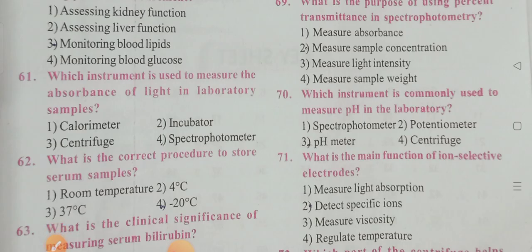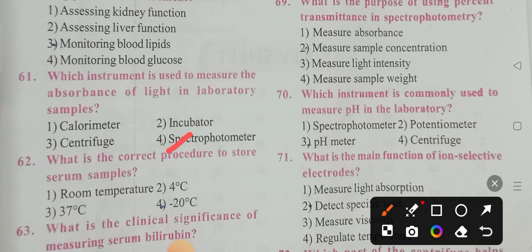Question 61: Which instrument is used to measure the absorbance of light in laboratory samples? Options: colorimeter, incubator, centrifuge, spectrophotometer. Option 4 is the correct answer — spectrophotometer.